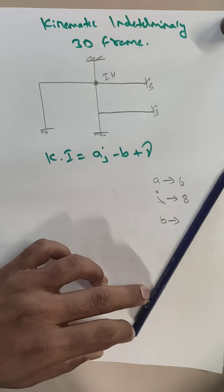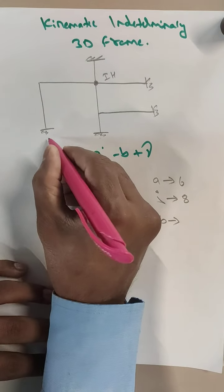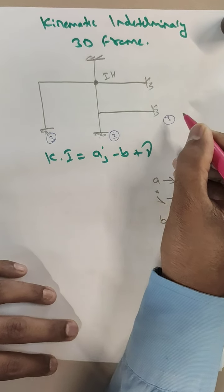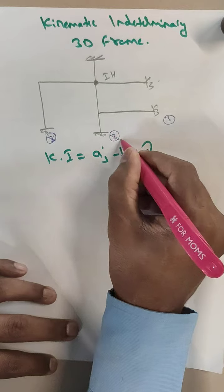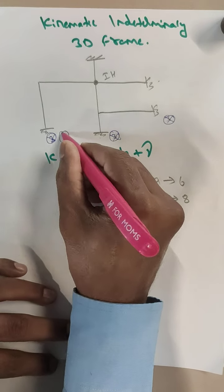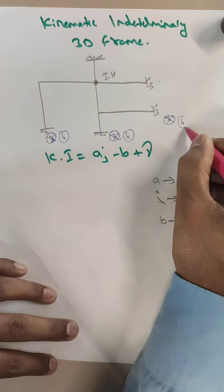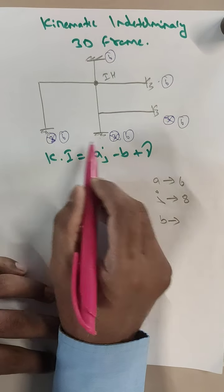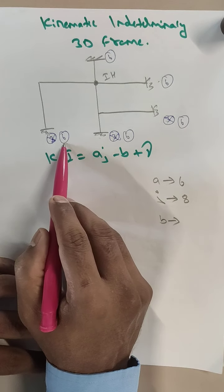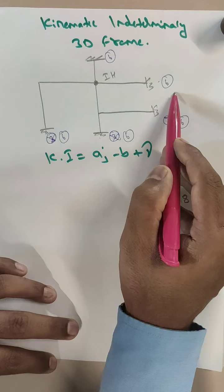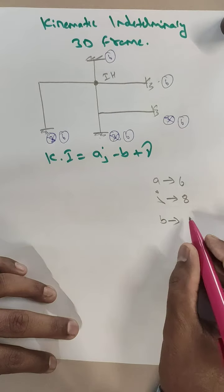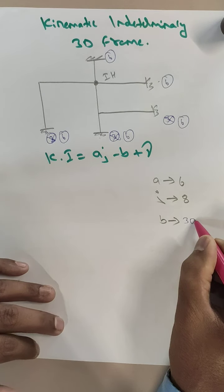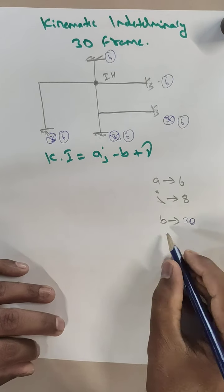'b' is the number of reactions available. As it is a 3D structure, each support contributes 6 reactions — not 3 as for a 2D structure. So we have 6 reactions at each of the 5 supports: 6 × 5 = 30 reactions in total.